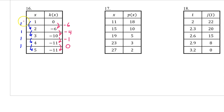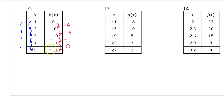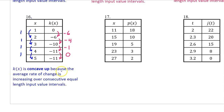For number 16, these are the changes in the input values and the changes in the output values. As we move from negative 6 to negative 4 to negative 1 to 0, the output value changes are increasing — we are moving to the right on the number line. Since we have consecutive equal length input value intervals, the average rate of change is also increasing. Therefore, k of x is concave up. K of x is concave up because the average rate of change is increasing over consecutive equal length input value intervals.